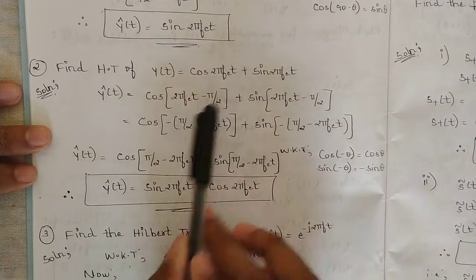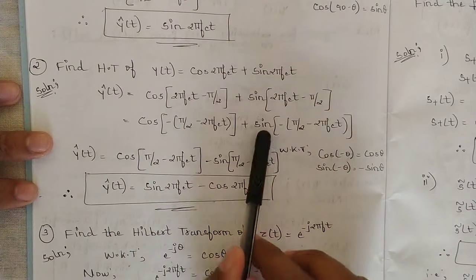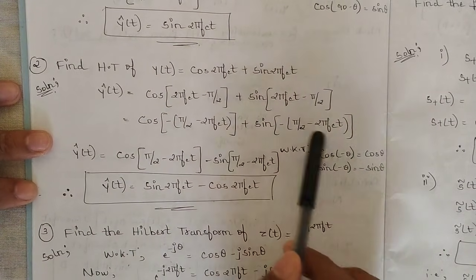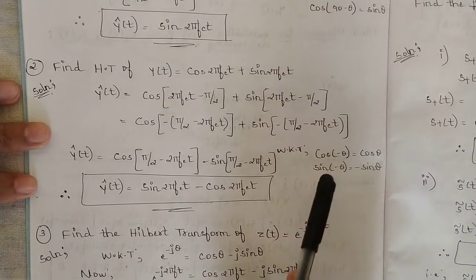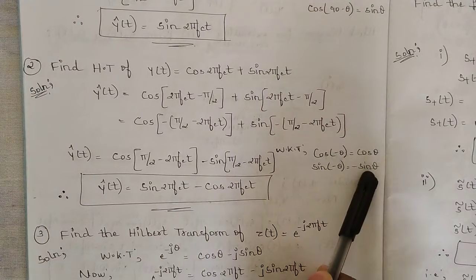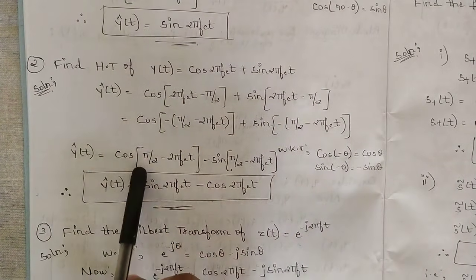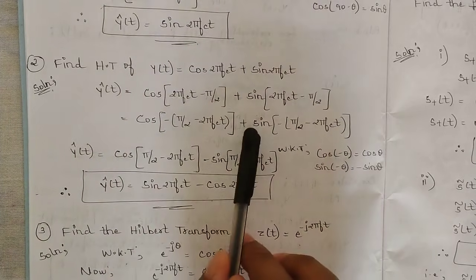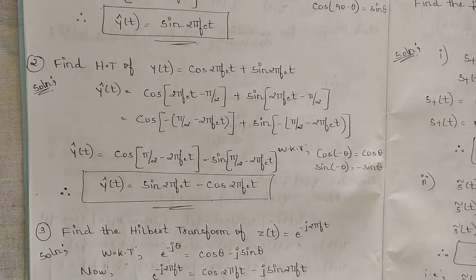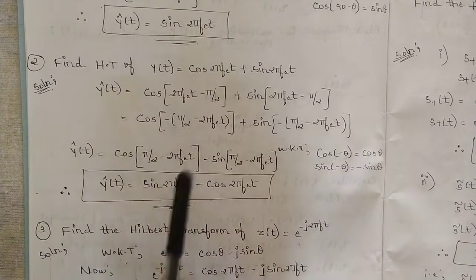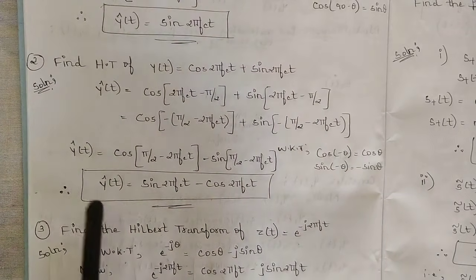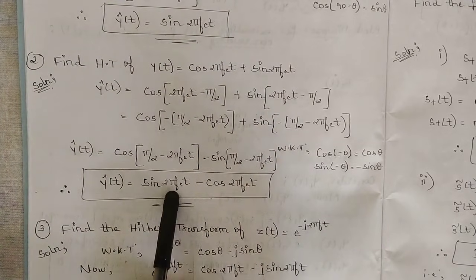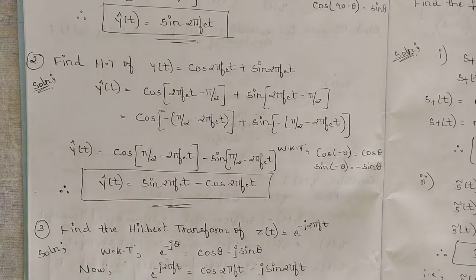We get cos(π/2 − 2πfct) + sin(−π/2 − 2πfct). Using cos(−θ) = cos θ and sin(−θ) = −sin θ, this becomes cos(π/2 − 2πfct) − sin(π/2 − 2πfct). Since cos(90° − θ) = sin θ and sin(90° − θ) = cos θ, the final answer is ŷ(t) = sin(2πfct) − cos(2πfct).